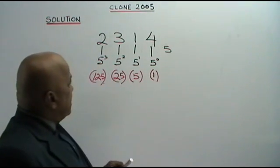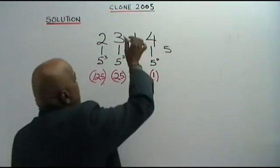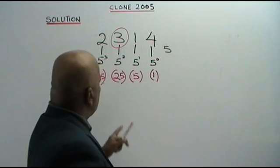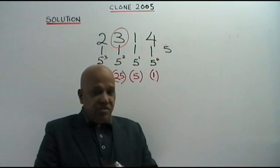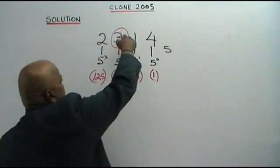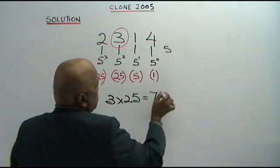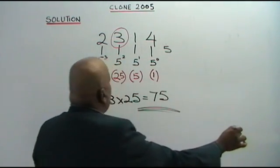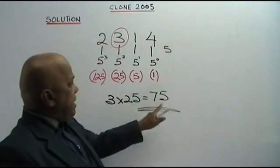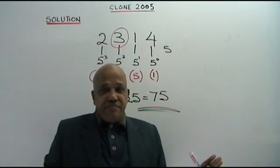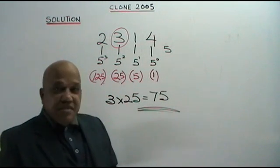We are only focused on the digit 3. You are asked to find the value of digit 3 in base 10. So, 3 times 25 equals 75. That is your answer in base 10. The value of digit 3 in base 10 is 75. Very simple. I hope you get it. Thank you.